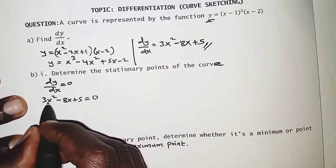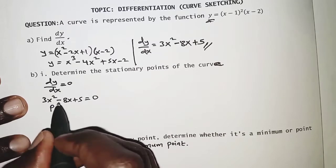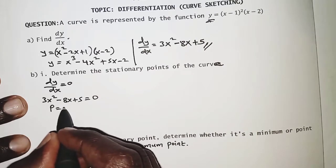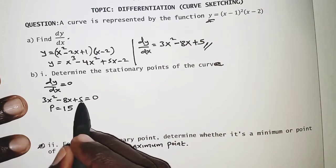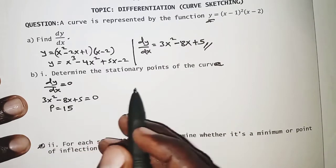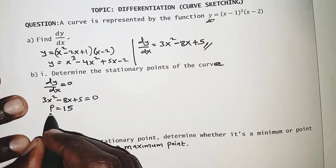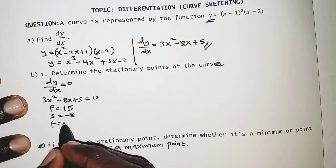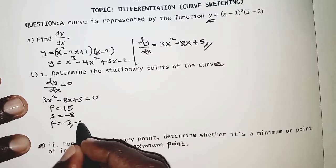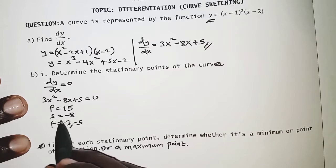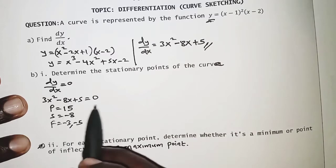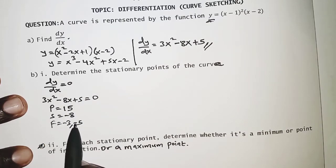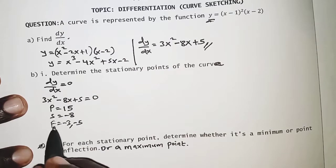We'll use the factor method. We need two factors whose product is 3 × 5 = 15 and whose sum is −8. The factors are −3 and −5: multiplying gives +15 and adding gives −8. So we replace −8x with −3x and −5x respectively.